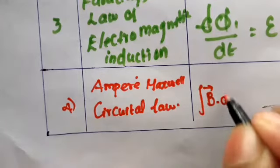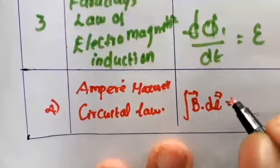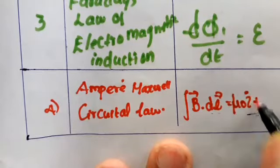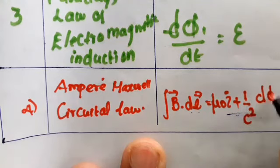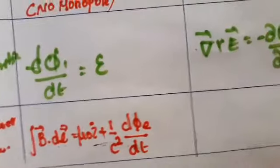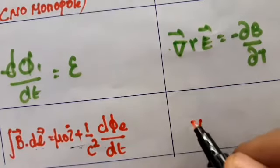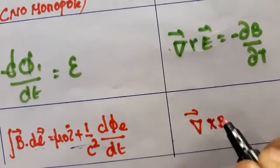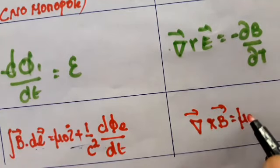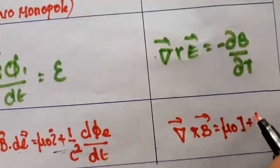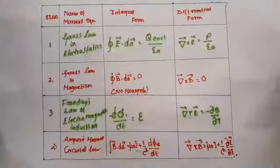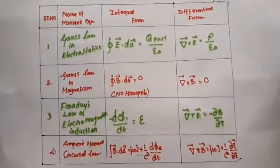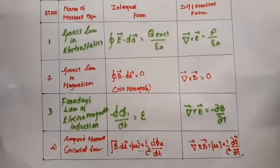Equation 4, the Ampere-Maxwell law: the closed integral of B vector dot dL vector equals mu naught times I plus 1/c² times dφ_E/dt. The differential form is: divergence operator cross B vector equals mu naught times current density J plus 1/c² times the partial of E. These are Maxwell's equations in both integral and differential form. Hope you like this video — if so, don't forget to subscribe, like, comment, and share. Thank you.